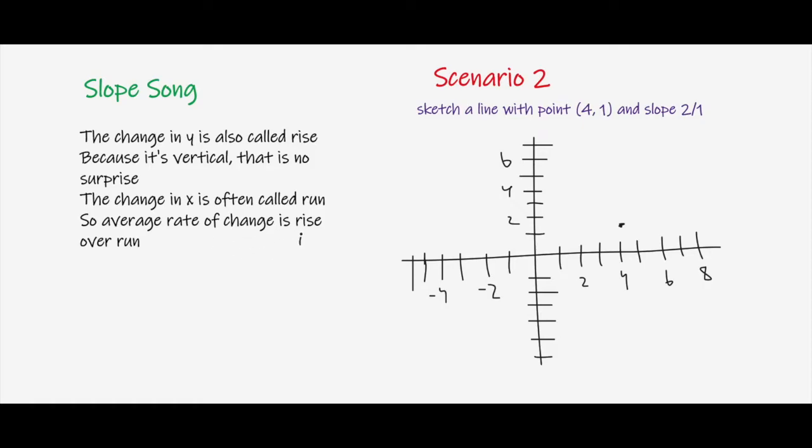So rise is change in y. I'm going to write that right here and run is change in x. So we can rewrite our slope 2/1 in the form of rise over run.